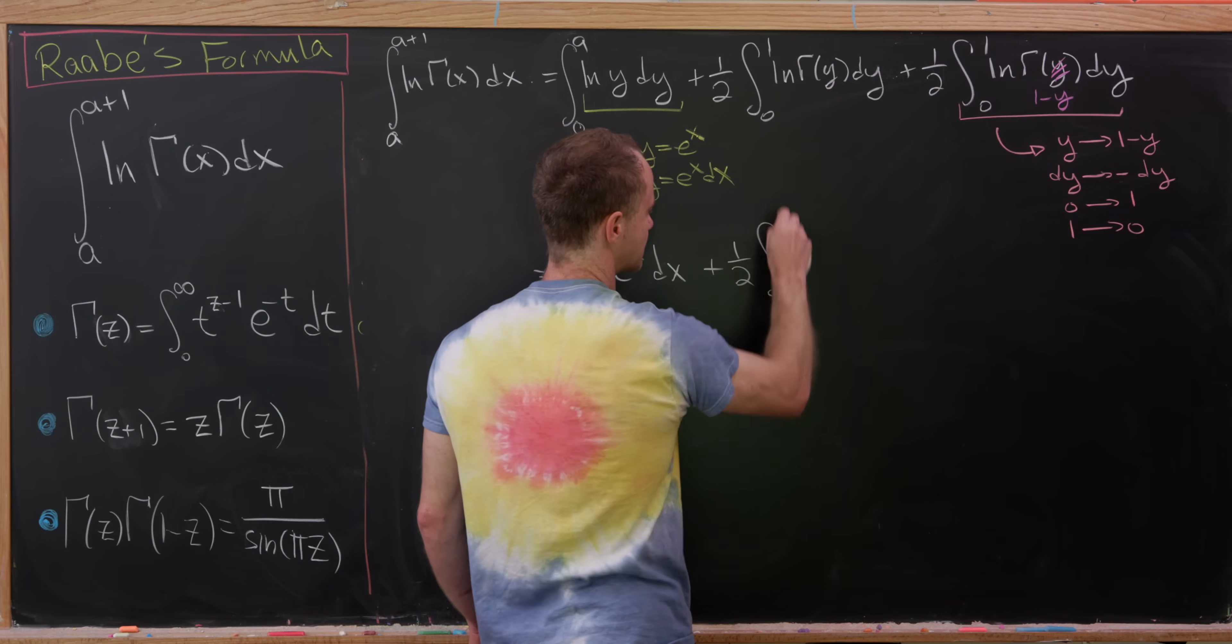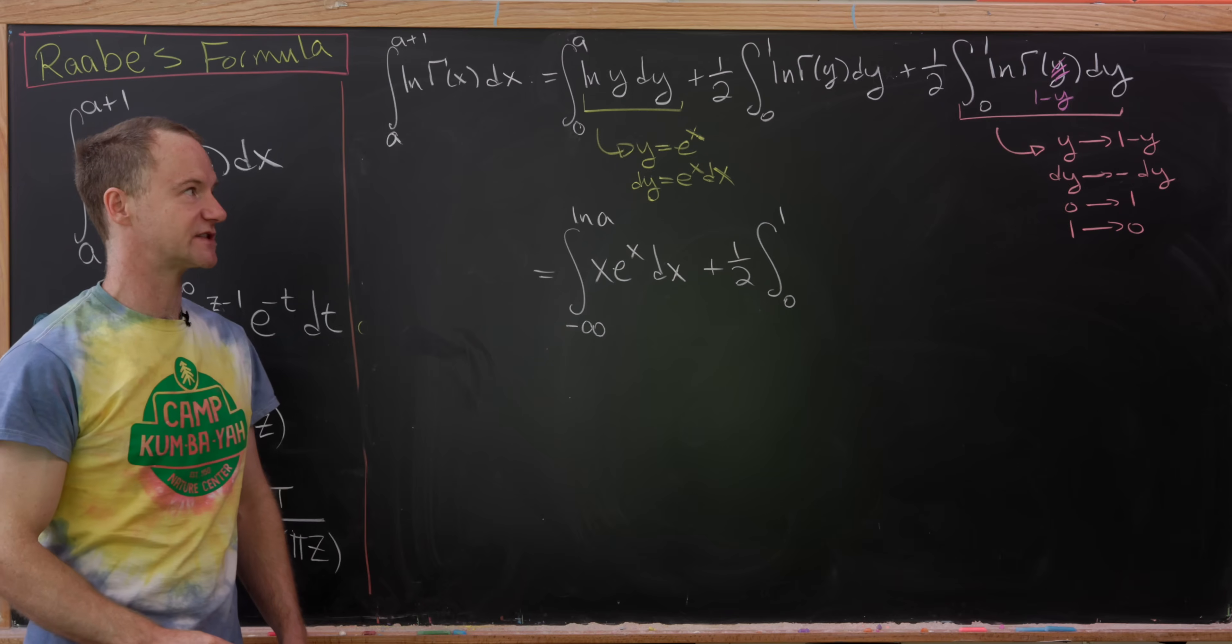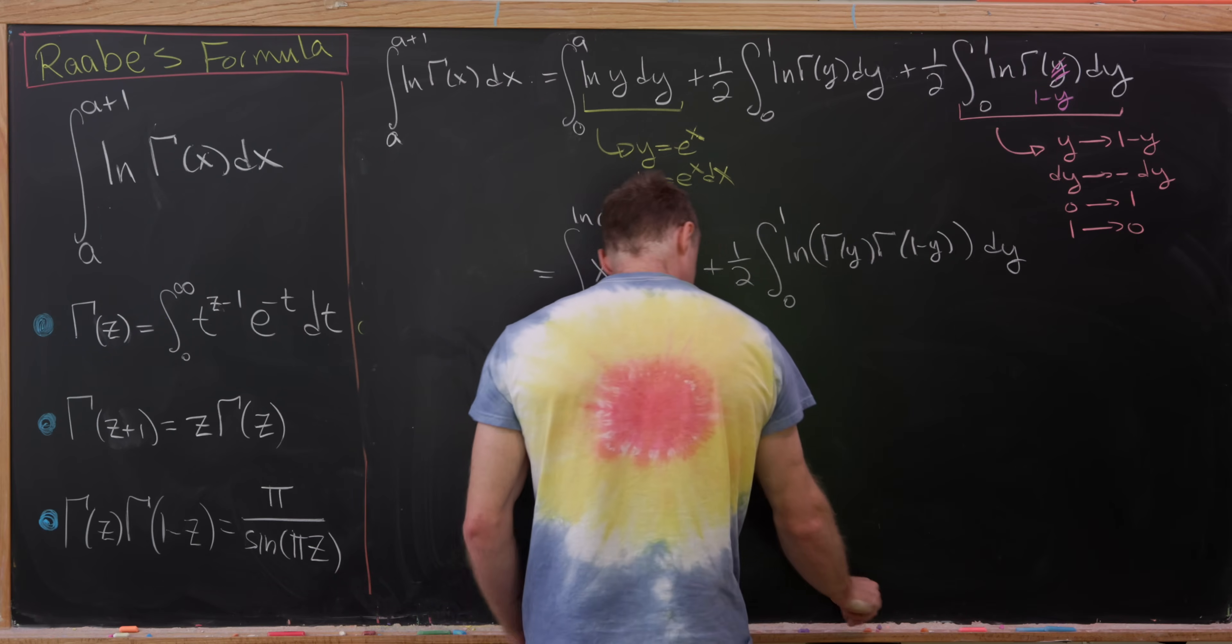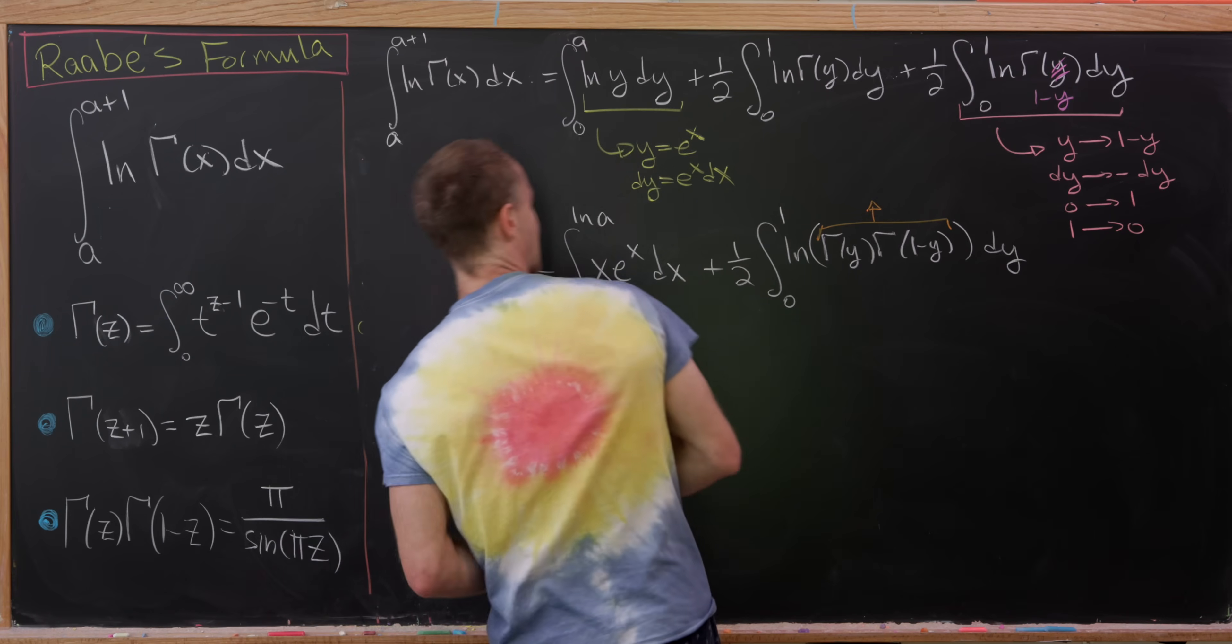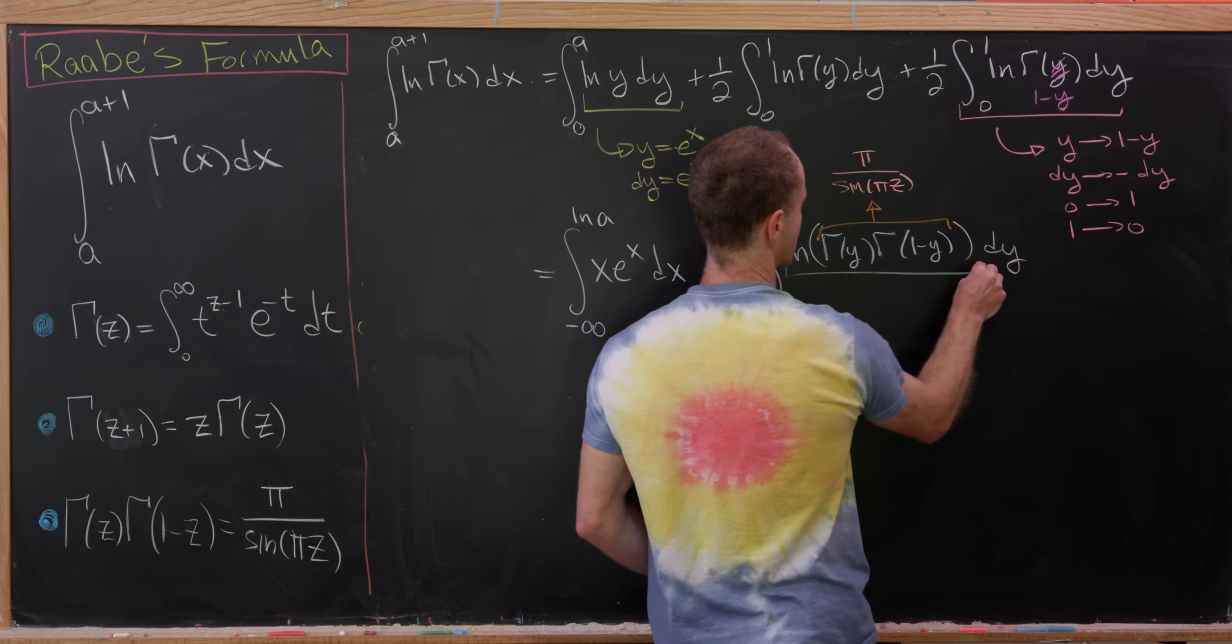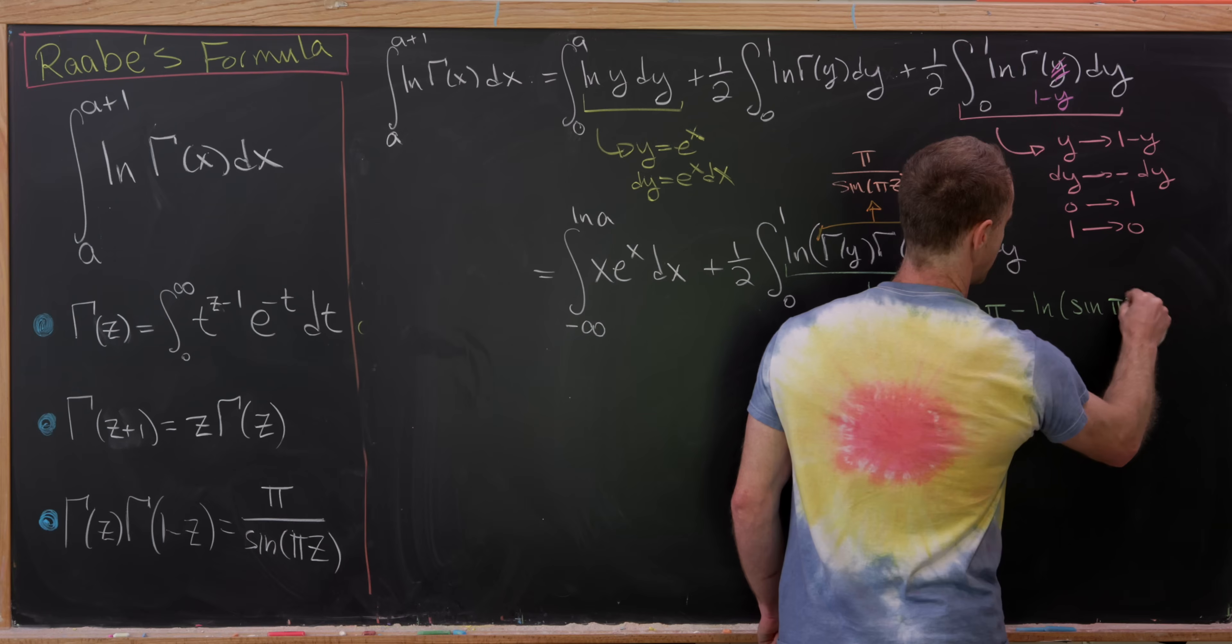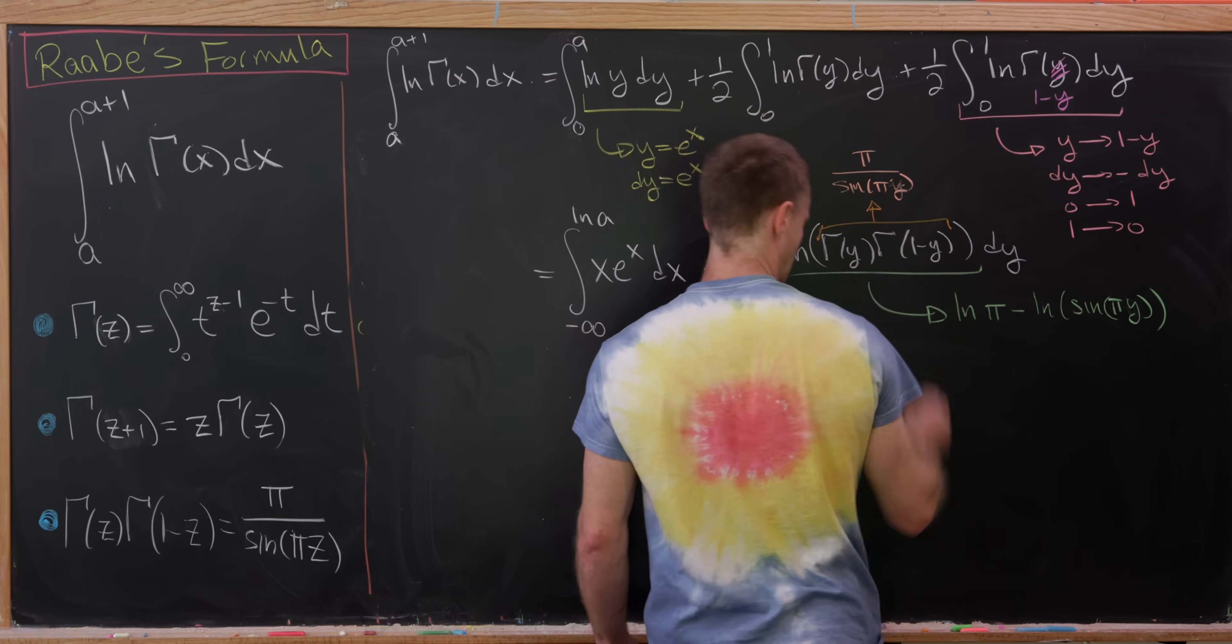Okay, and then we'll have plus one half the integral from 0 to 1 of, so smushing these together, we have log of gamma of y plus log of gamma of 1 minus y. But we can turn a sum into a product again, giving us log of gamma of y times gamma of 1 minus y. And then next up, we'll take this product and use our reflection formula over here. So that allows us to write this as pi over sine of pi times z, which in turn, that quotient can be turned into a difference using logarithm rules once again. So this is the log of pi minus the log of sine of pi times y.